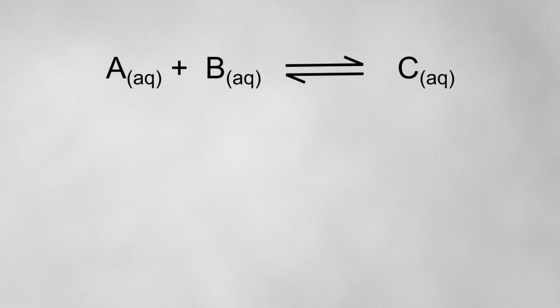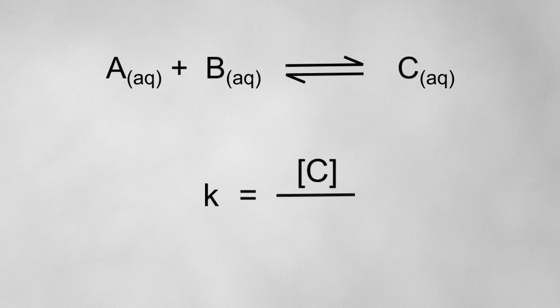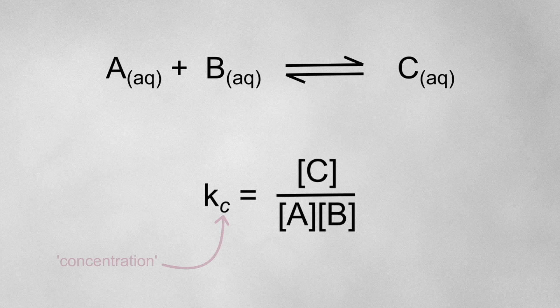I can go into the fundamentals of equilibrium more in another video, but for now let's say we have a reaction where substance A plus substance B react reversibly to give us substance C, all under aqueous conditions. The equilibrium constant for this reaction is given the symbol K and is calculated using the following equation: K equals the concentration of the products of the reaction as written, divided by the concentration of the reactants. Since this particular equilibrium constant uses concentrations, we label it as Kc, where the C stands for concentration.